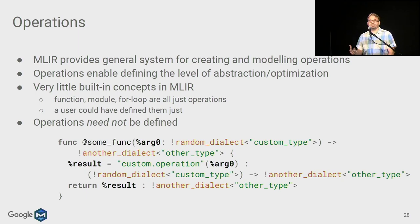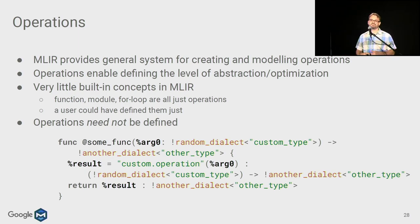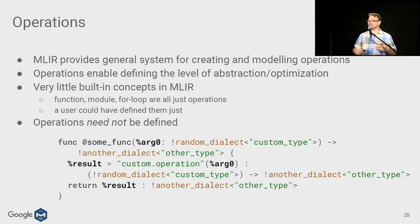Operations need not even be defined in advance. If an operation is not defined, MLIR treats it conservatively — passes are written with the assumption that they must be robust against unknown operations. This is quite powerful, especially as you're developing a dialect and refining your abstractions.